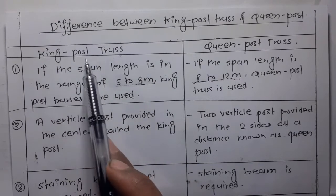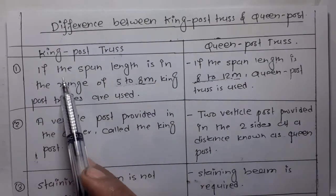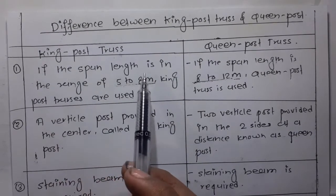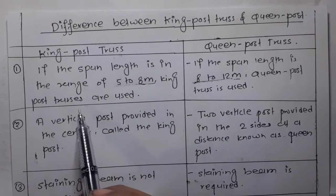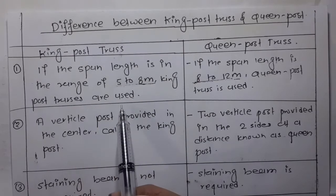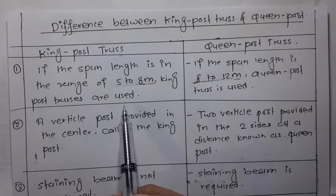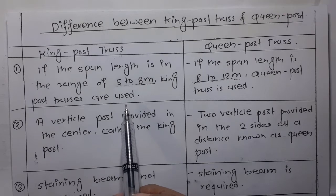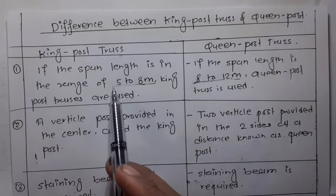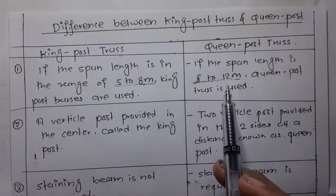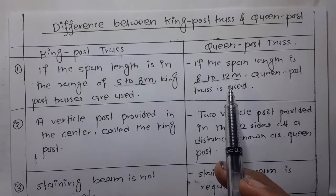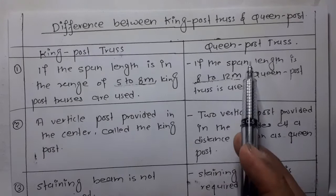King post truss: if the span length is in the range of 5 to 8 meters, then king post truss is used.